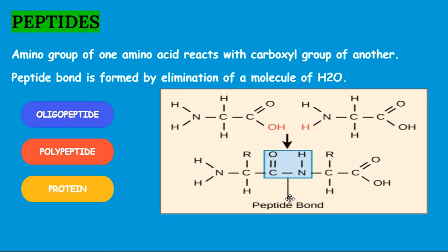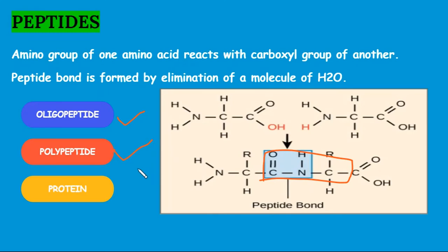What is a peptide bond? When the amino group of one amino acid reacts with the carboxyl group of another, a peptide bond is formed. When 2 to 10 amino acids combine, then an oligopeptide is formed. When more than 10 amino acids join, then a polypeptide is formed. And when hundreds of amino acids join, then a protein is formed.